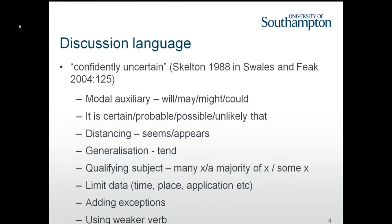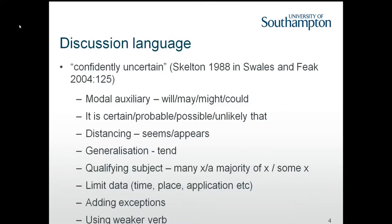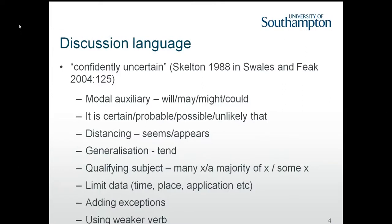If we imagine a scale where on one end you are absolutely 100% certain about something, and on the other end you have absolutely no idea, whatever your finding is will come somewhere on that scale. You need to use the appropriate language to make clear where on the scale you fall. If you're always using weakening language like 'it might be,' 'it seems that,' 'it's possible,' that's okay if you really are uncertain — but if you're always that uncertain, it's unsatisfying to the reader. Equally, if you're overstating and overclaiming, someone could easily challenge it and your argument might completely fall flat.